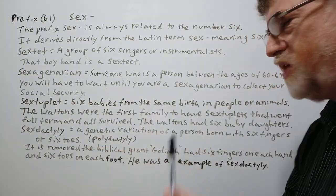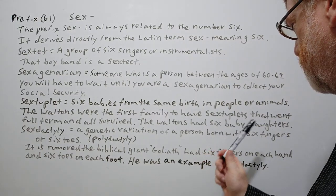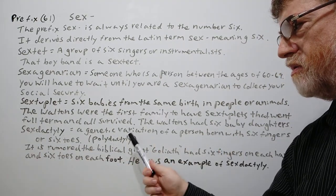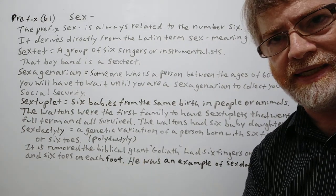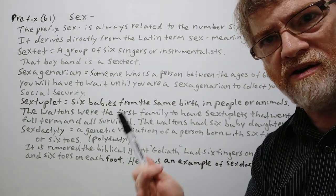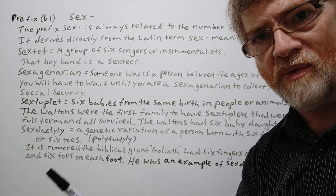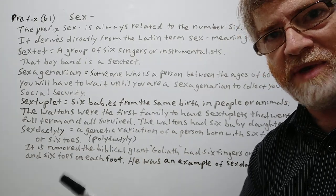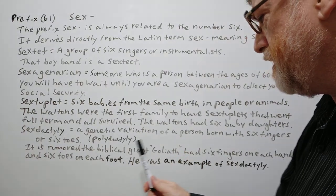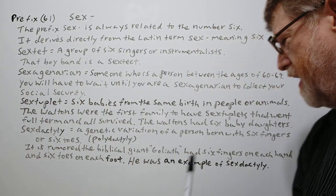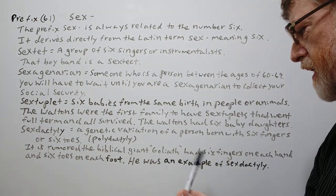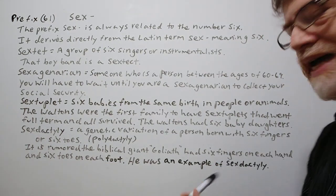The next word is sexdactyly — a genetic variation of a person born with six fingers or six toes. It can sometimes also be referred to as polydactyly. So if somebody is born with a sixth finger or a sixth toe, they could be an example of this. Example: it is rumored that the biblical giant Goliath had six fingers on each hand and six toes on each foot — he was an example of sexdactyly.